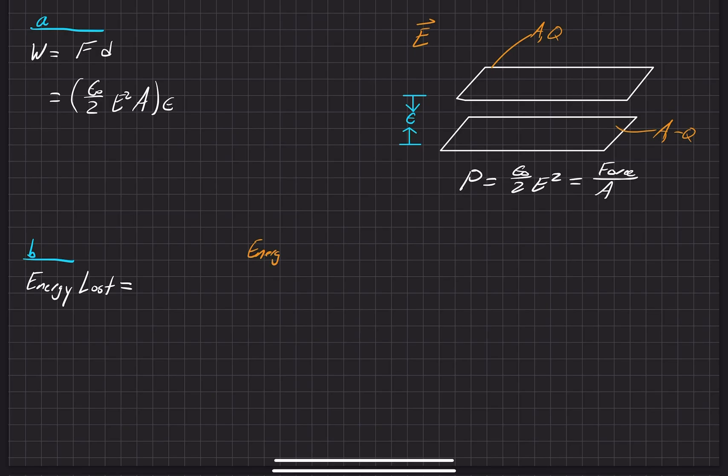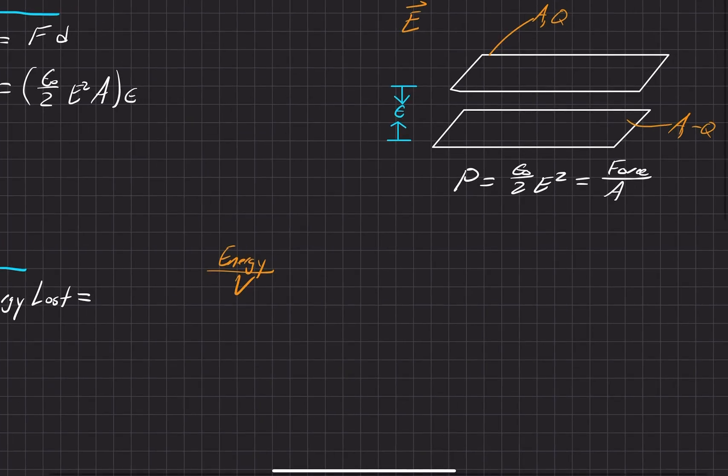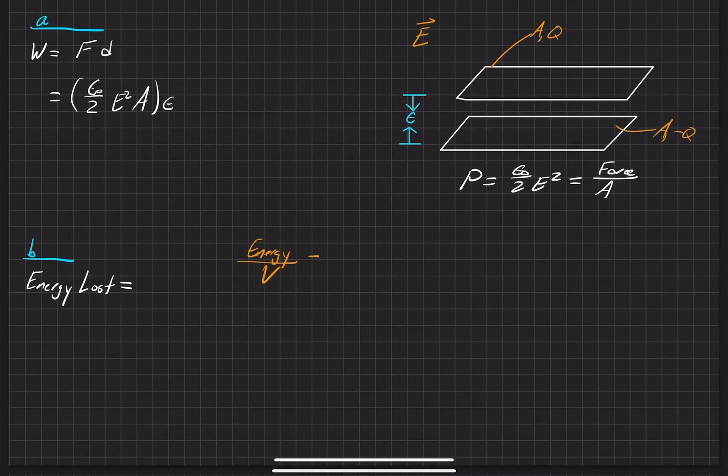The energy per unit volume is equal to epsilon naught over two times the electric field squared. If we want to find the energy lost, we can use the energy.